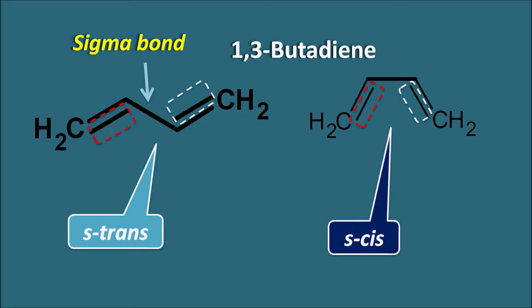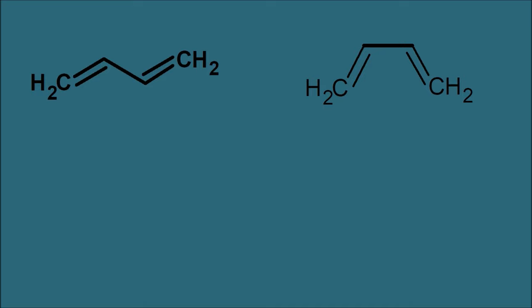As we know, conformations can be rapidly interconvertible, so we cannot separate these two conformations in 1,3-butadiene. Because the trans conformation is always more stable in open-chain dienes, 1,3-butadiene mainly exists as the S-trans conformation. But we can fix these conformations if we convert this open-chain compound into a cyclic compound, because cyclic compounds cannot change their conformations very easily. Let us take the 1,3-butadiene S-trans and S-cis conformations and see how we can incorporate these double bonds into cyclic structures.